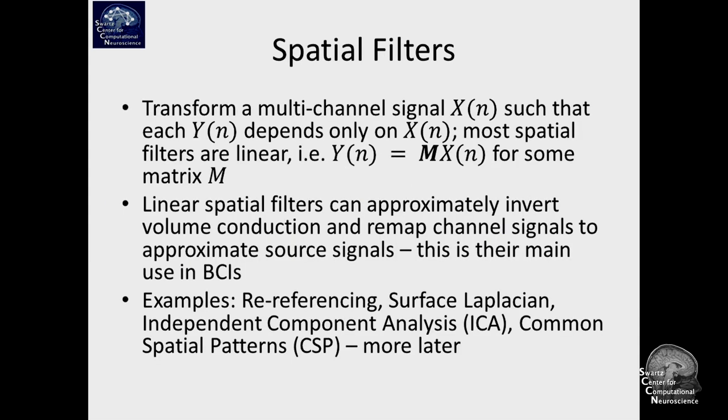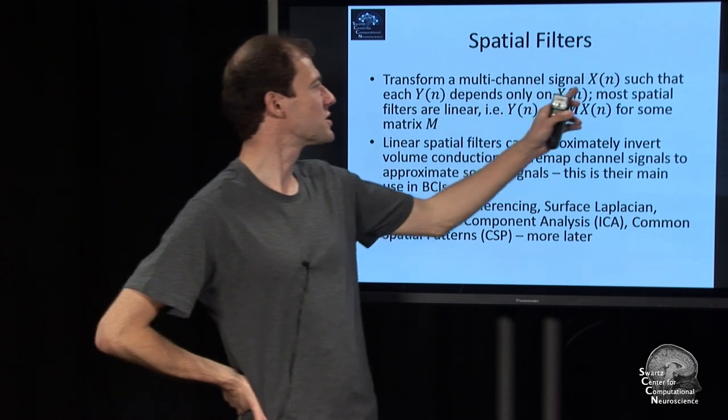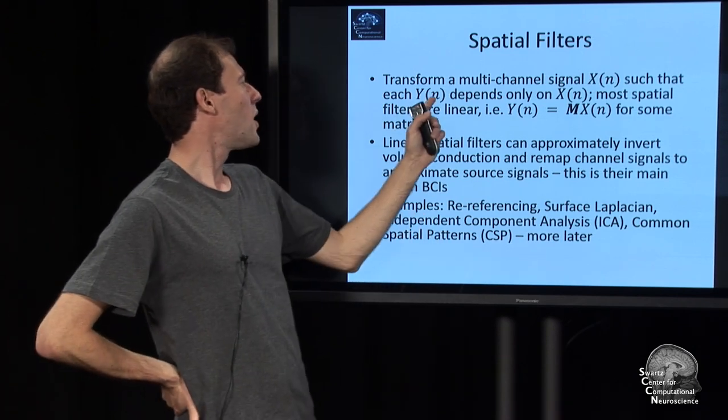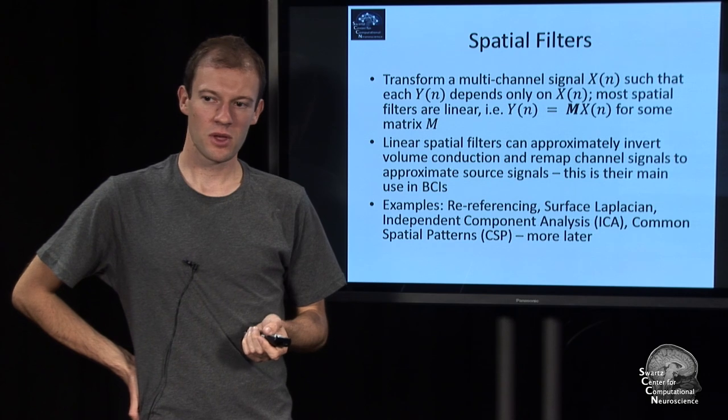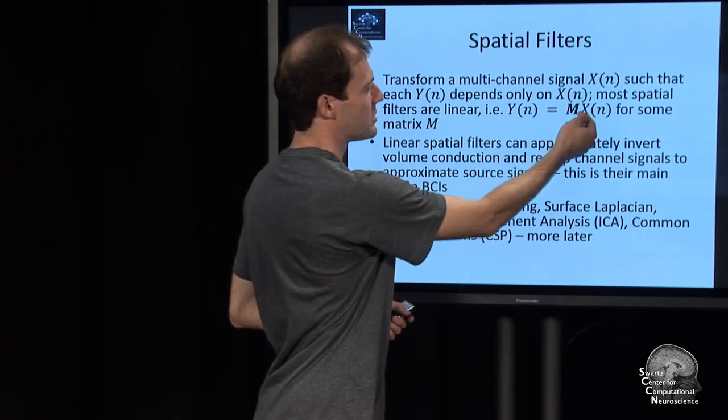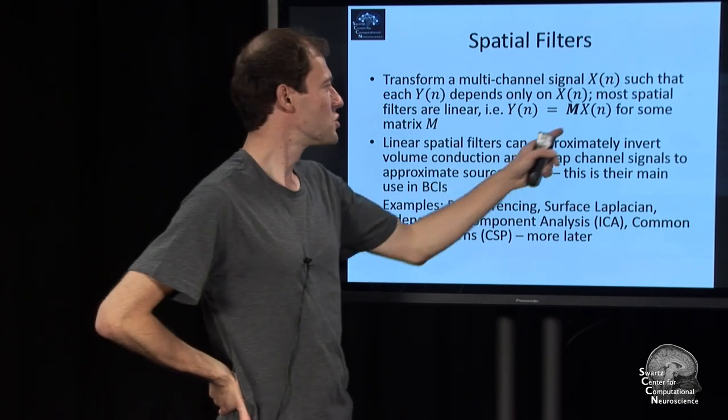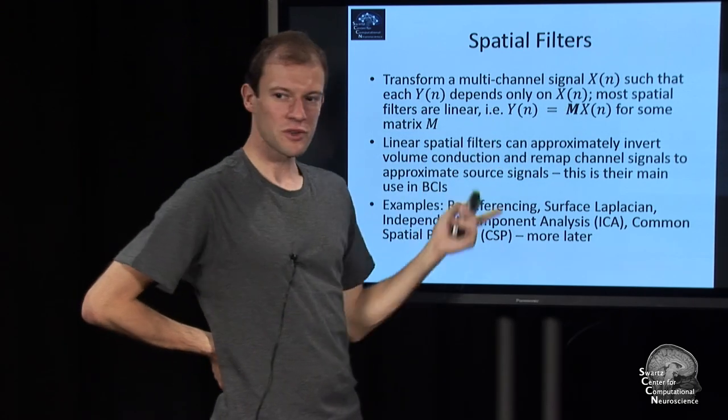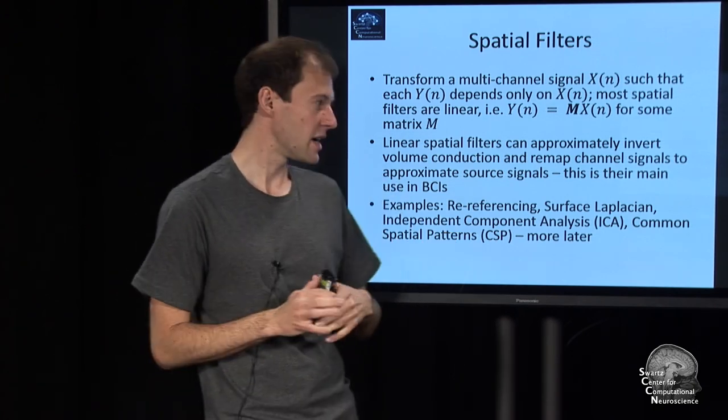The next more complicated one are what we call spatial filters. Filters that operate across space and they don't operate across time. Formally, they take a multi-channel signal X. I am now using capital letters to denote multi-channel signals. The output Y at that time point depends only on Xn, so they're static. Most of them are linear, so you can write it as a linear map. The nth sample is a matrix M times that sample. You can say the rows of this matrix are individual spatial filters, a linear combination of channels.